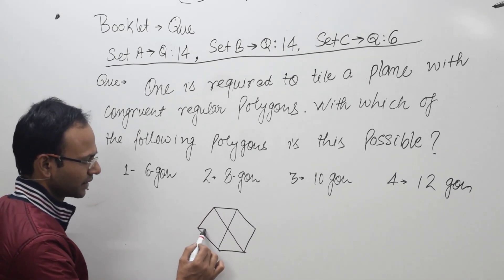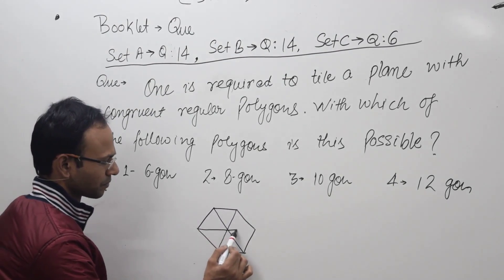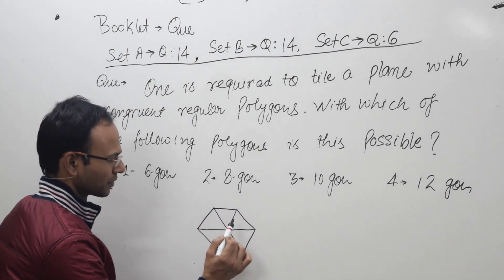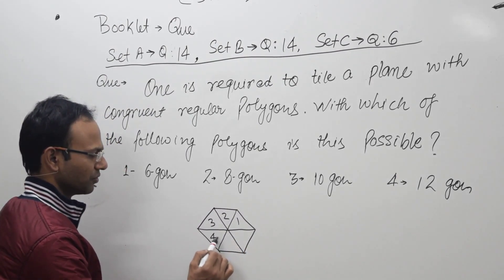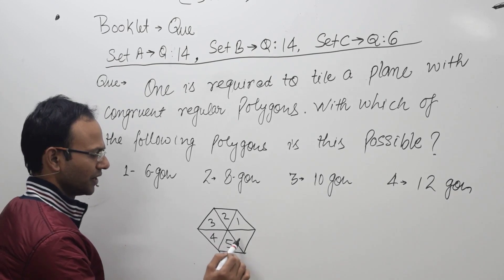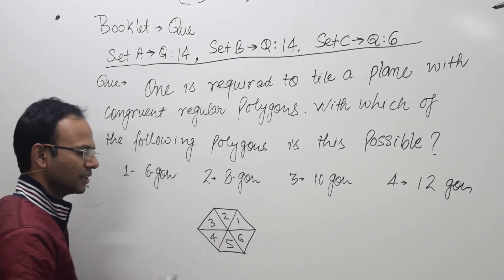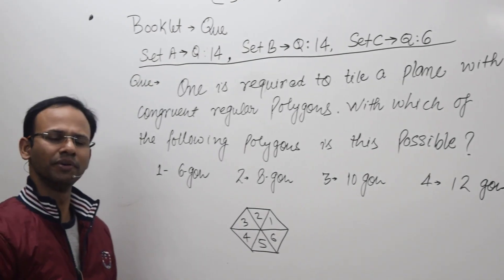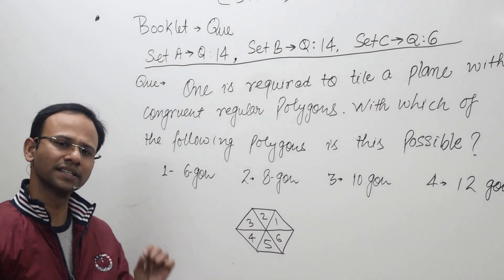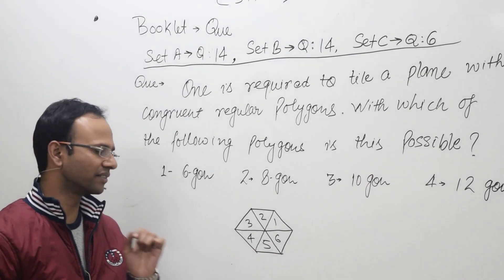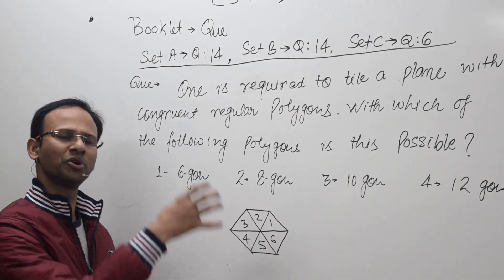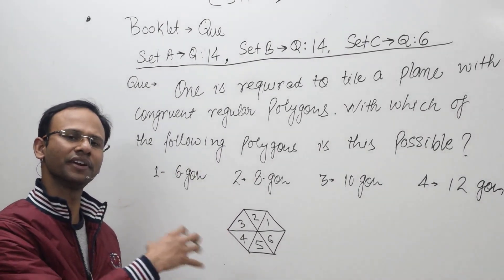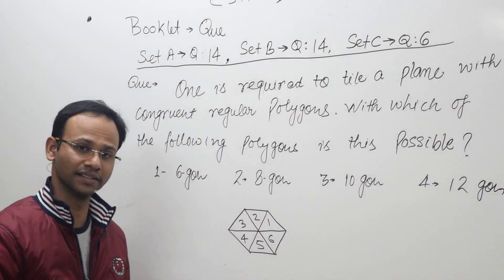Like this — 1, 2, 3, 4, 5, 6. So if we put 6 equilateral triangles together like this, we can form a tile of a regular hexagon.